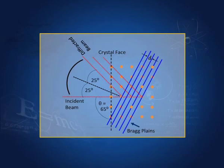Looking at the geometry once again: we have the incident beam, it gets reflected at an angle of 50 degrees. Taking the angle of incidence equal to angle of reflection, the angle between the normal and the incident beam is 25 degrees, and the Bragg planes are normal to this direction. That means the incident beam is incident at an angle of 65 degrees to the Bragg planes.